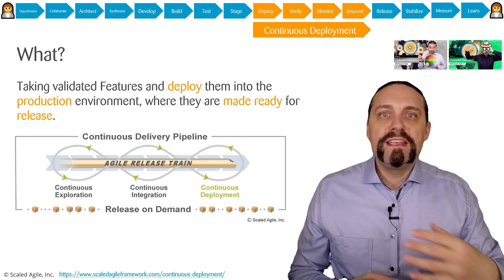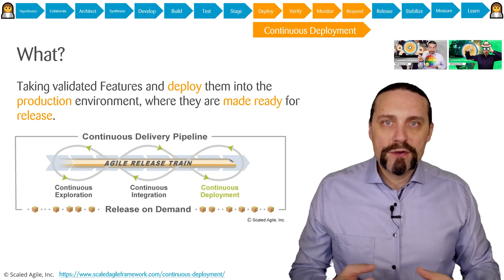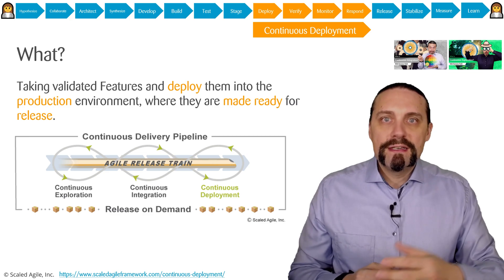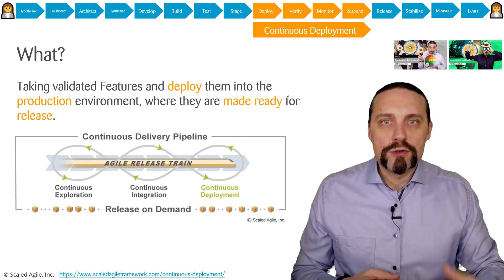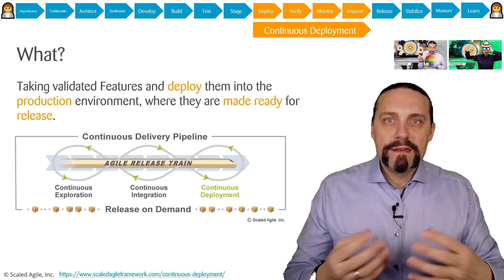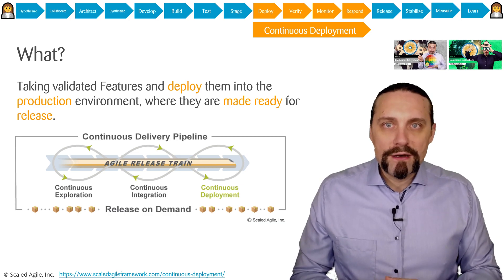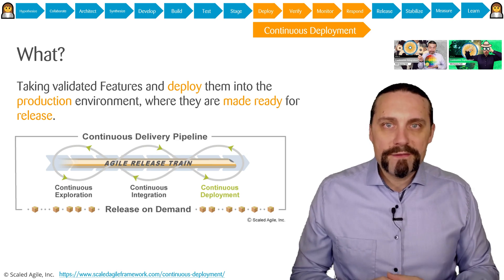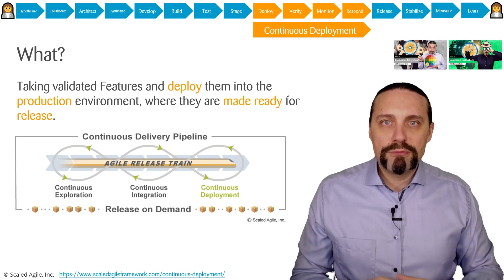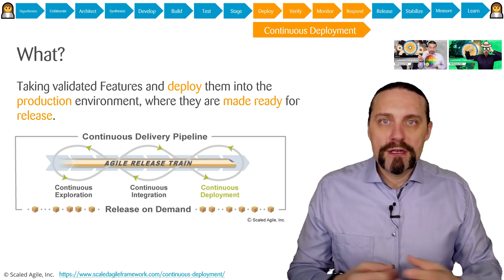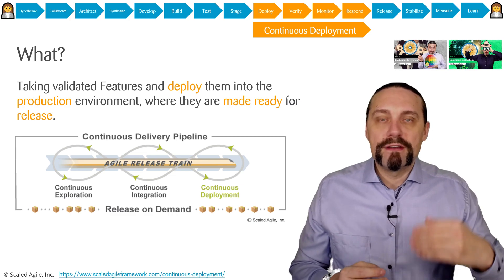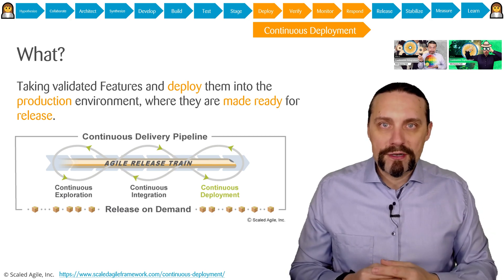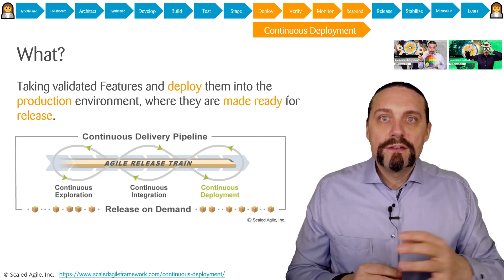With this backlog of features we go into continuous integration. We break down features into user stories, implement them, commit the code into version control, and the build server creates a deployable artifact. This artifact is verified through end-to-end tests, then deployed into a staging environment where we can present it to stakeholders. With this verified artifact we can now go into production, continuously deploying artifacts into a production system, making everything ready to be released.